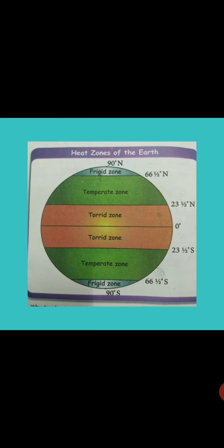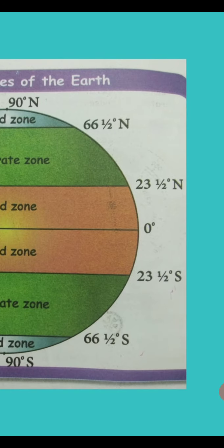Next, heat zones of the Earth. Draw a circle and write torrid zone, then temperate zone, then frigid zone. Write the degrees also. The upper part is the north direction and the lower part is the south direction.